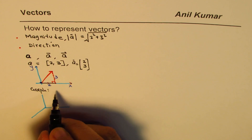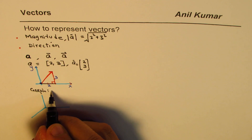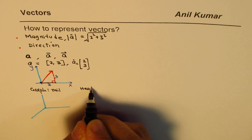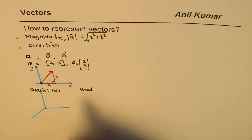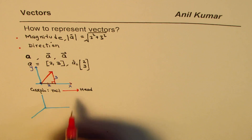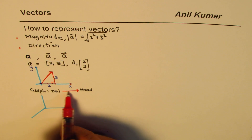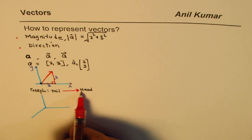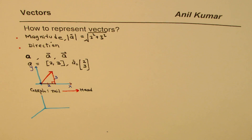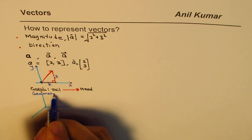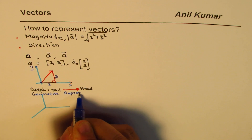Graphically, a vector has a tail and a head. If I draw a vector like this, the length gives you the magnitude and the direction goes from tail to head. That is the geometric representation.